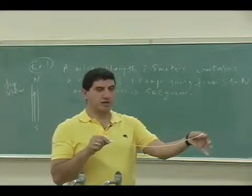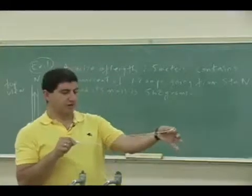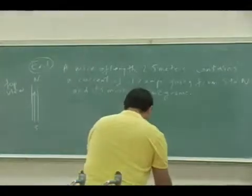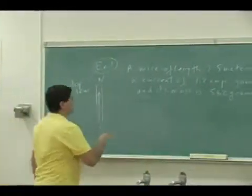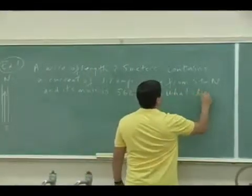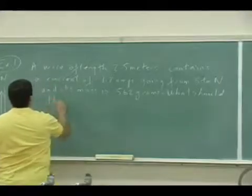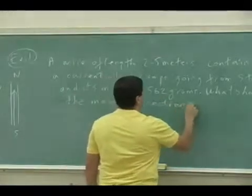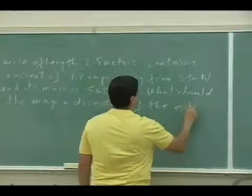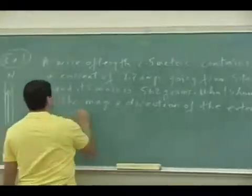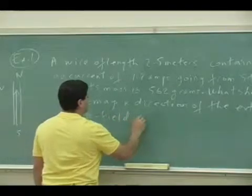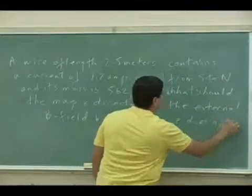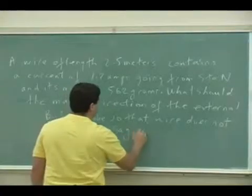Now I can bring a magnet up to it and the magnet can exert a certain force so that it straightens it out. It doesn't allow it to sag. So I want to know what should the magnitude and direction of the magnetic field be so that the wire doesn't sag. I want it to be straight. What should the magnitude and direction of the external B field be so that that wire does not sag under its own weight?